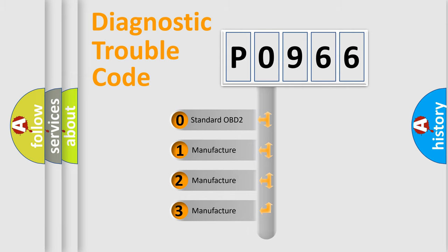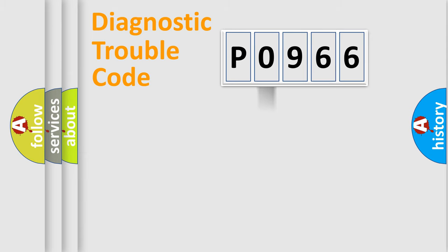If the second character is expressed as zero, it is a standardized error. In the case of numbers 1, 2, 3, it is a manufacturer-specific error.